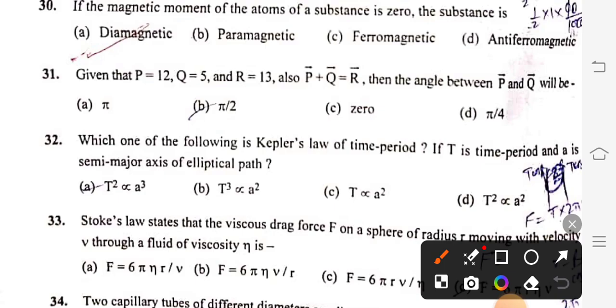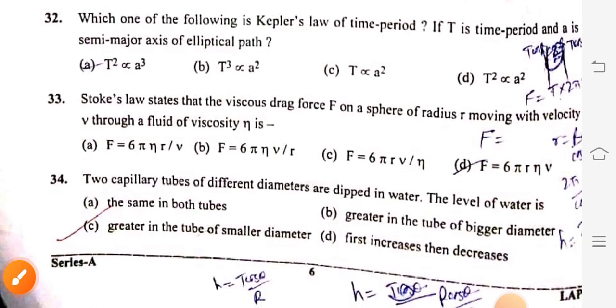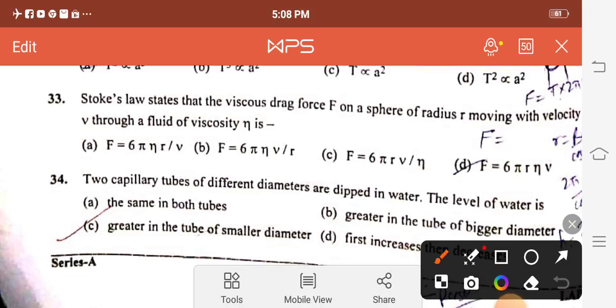Question 32: Which one of the following is Kepler's law of time period? If T is the time period and A is the semi-major axis, the right option is T square is directly proportional to A cube, option A. Question 33: Stokes law states that the viscous drag force F on a sphere of radius R moving with velocity V through a fluid of viscosity Eta is F equals 6 pi Eta RV, option D.